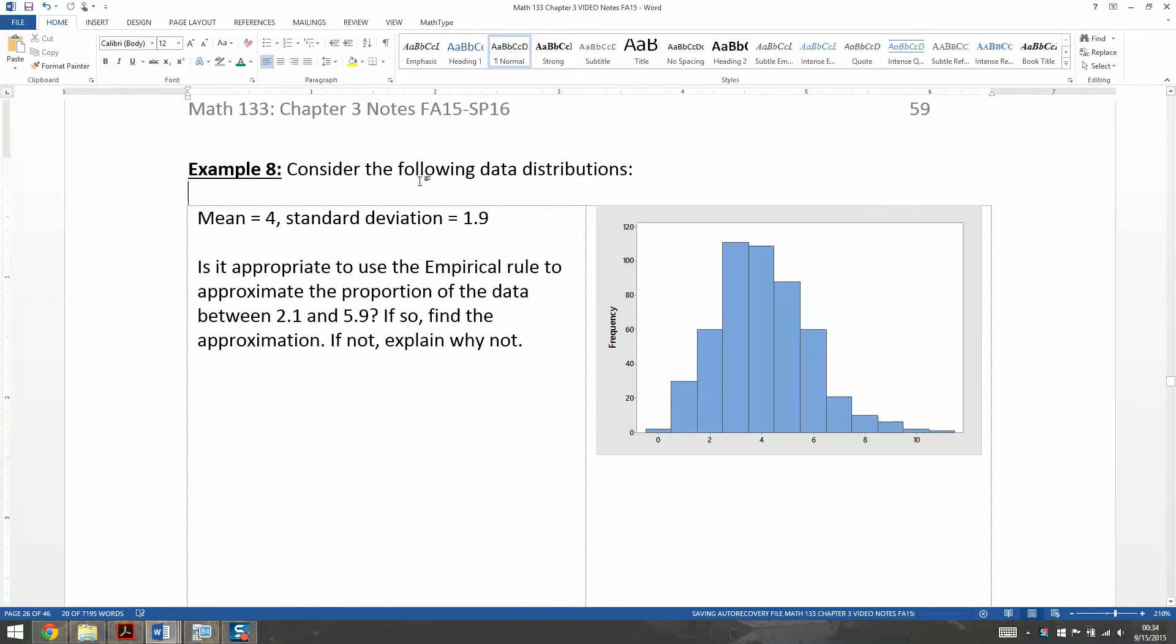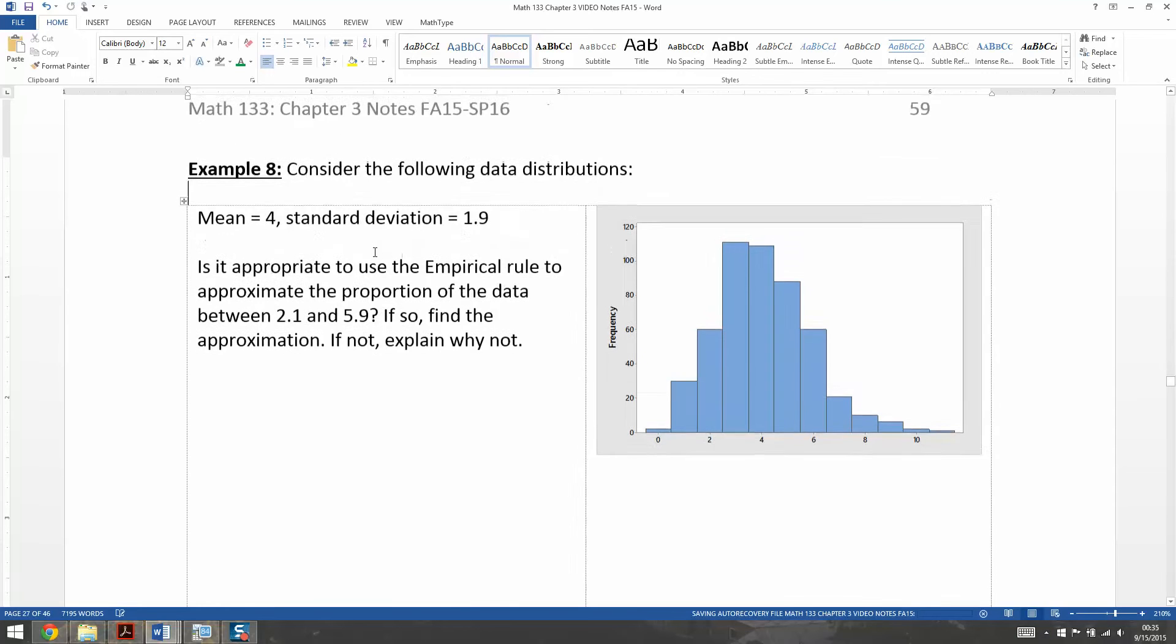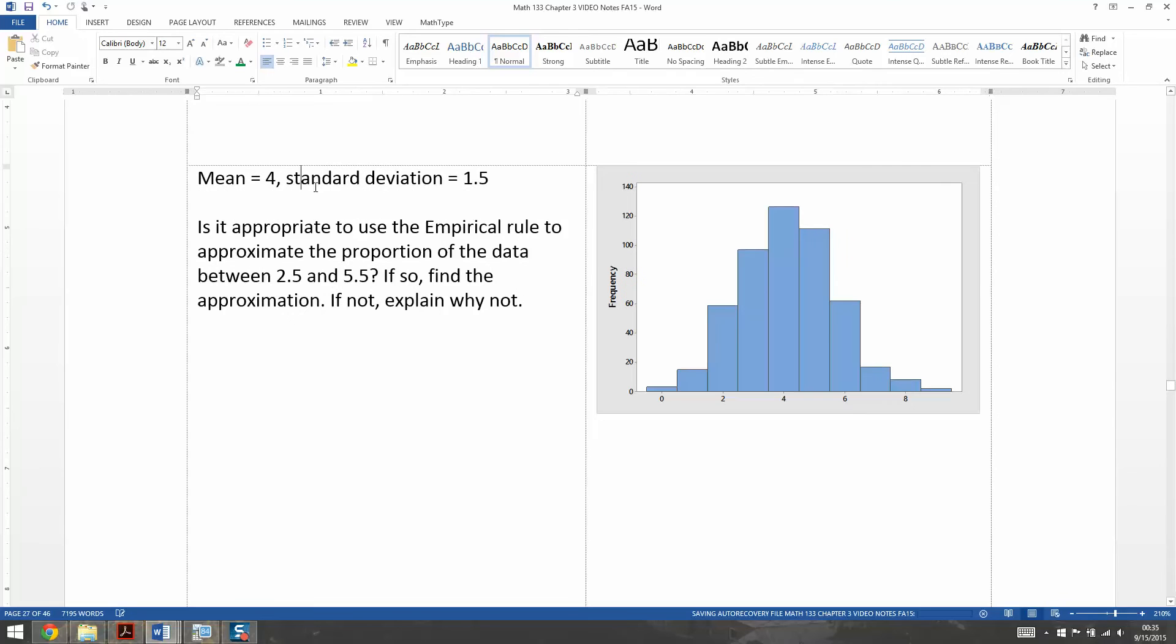Now let's consider the following data distribution. This particular distribution has a mean of 4 and a standard deviation of 1.9. Is it appropriate to use the empirical rule to approximate the proportion of the data between 2.1 and 5.9? If so, find the approximation. If not, explain why not. I have this one right here and then the same basic question for this one down here where the mean is 4 and the standard deviation is 1.5, and I'm talking about 2.5 and 5.5.